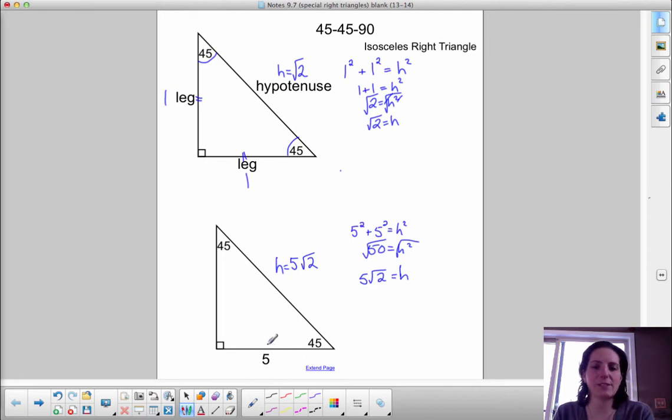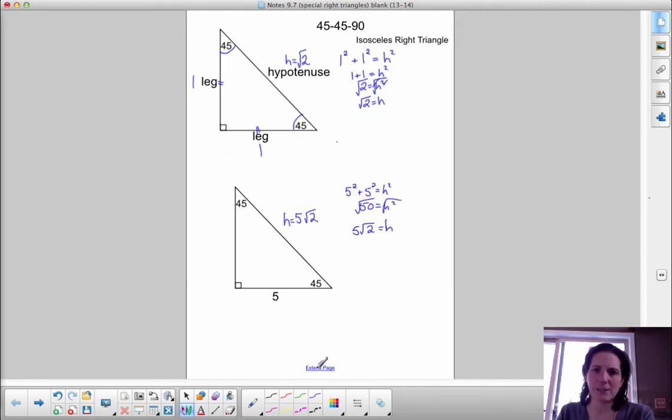So we changed the leg to five, and the hypotenuse became five root two. When the leg was one, the hypotenuse was square root of two. What that tells us is that we have a pattern. It's just a little bit different than the triples that we saw, but in many ways, still the same.